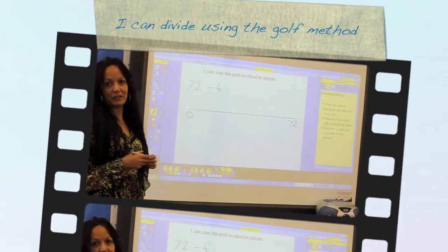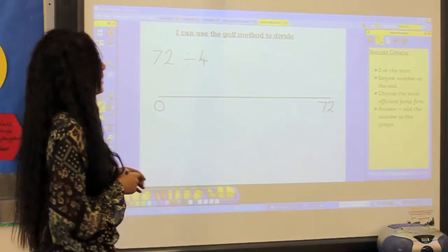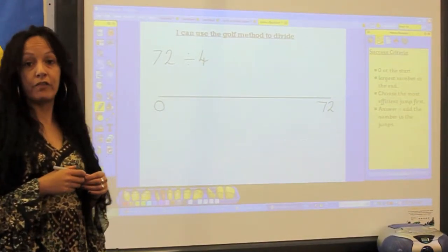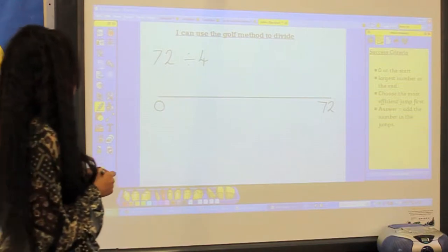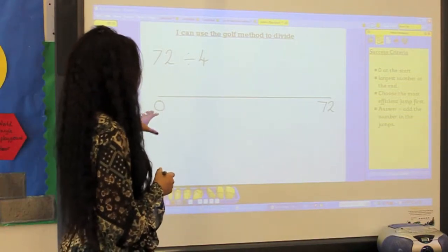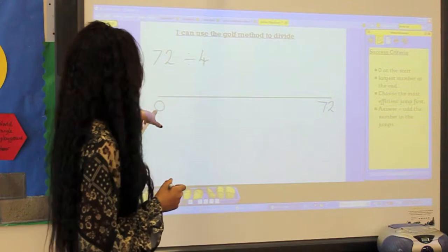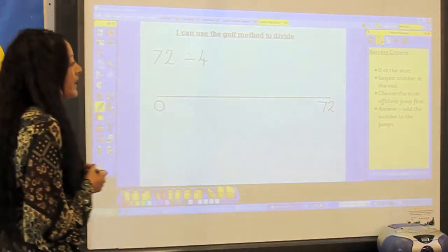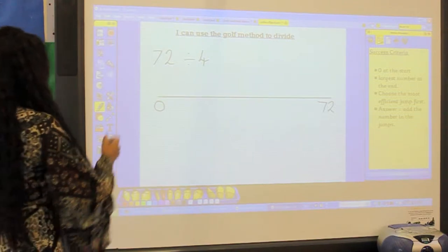I can use the golf method for division. So what we're trying to do is teach children a more efficient way of doing division on the number line. What we do is we start with the number line as normal with the zero at the start and the large number at the far end.